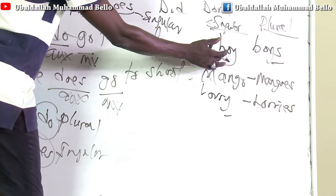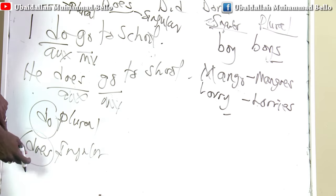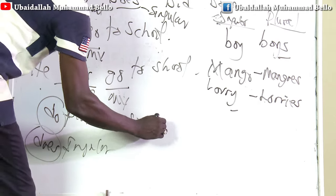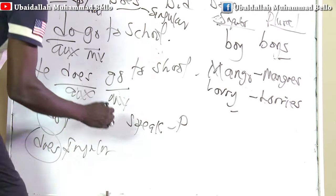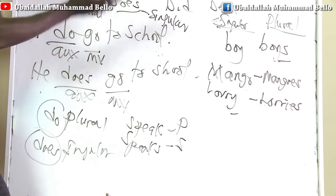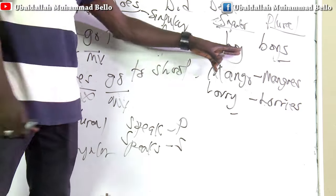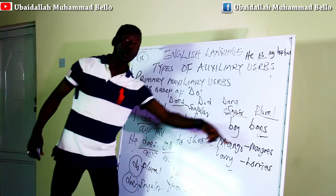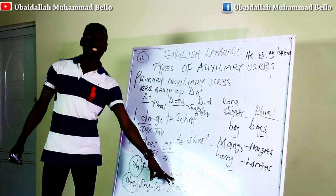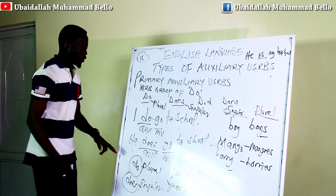Unlike what you have for 'boy' — taking '-es' to mean plural — if a particular verb takes '-es,' it becomes singular. For instance, 'speak' is plural while 'speaks' is the singular form. You can see how verb number differs from the pluralization rule you know for nouns. You have to be very, very careful.